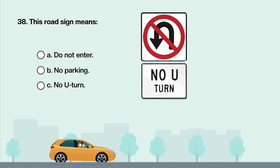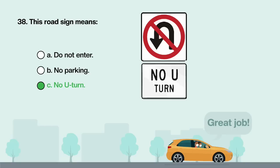This road sign means: A. Do not enter. B. No parking. C. No U-turn. Answer is C: No U-turn.